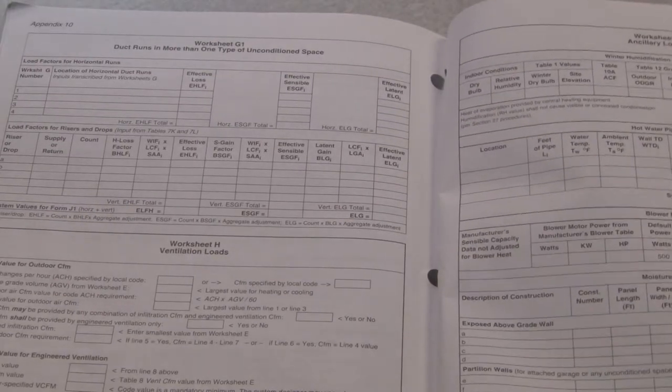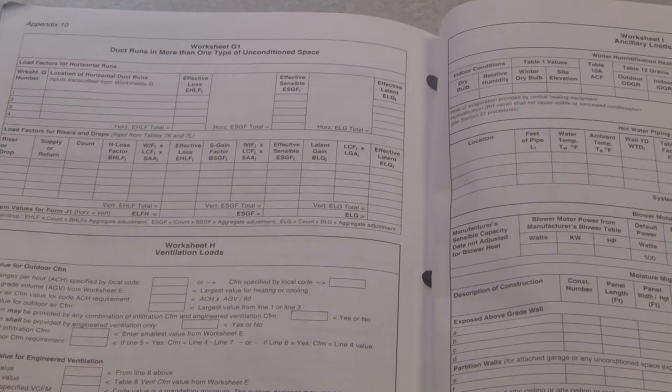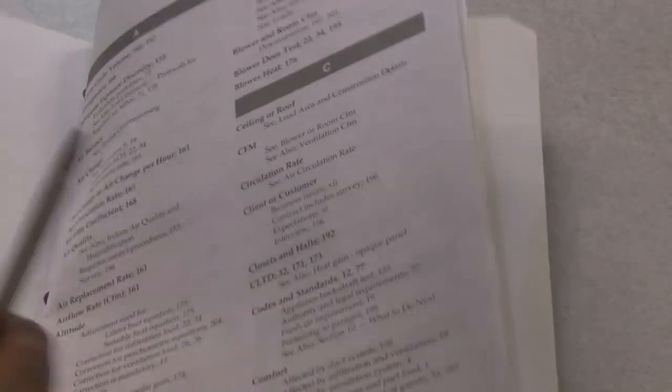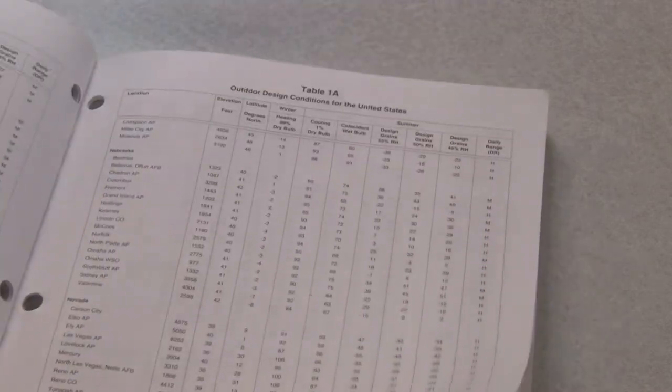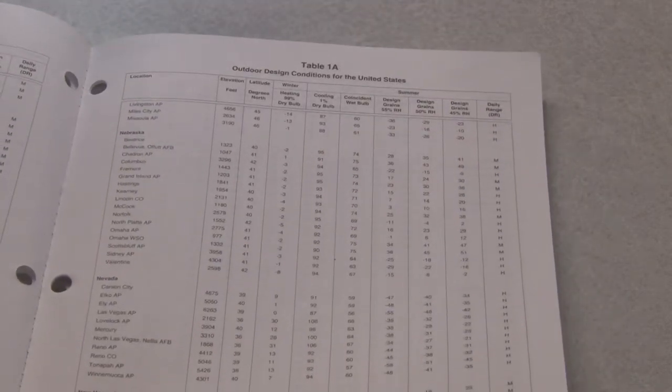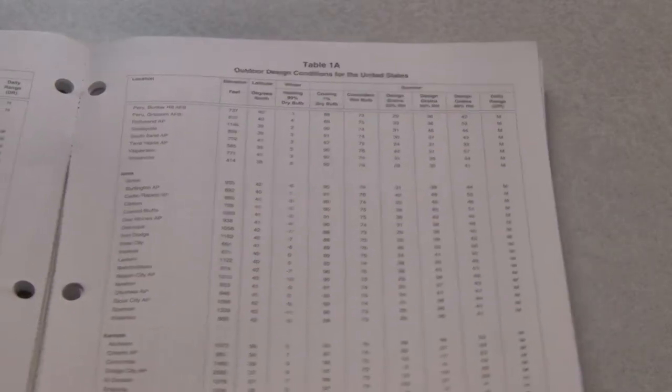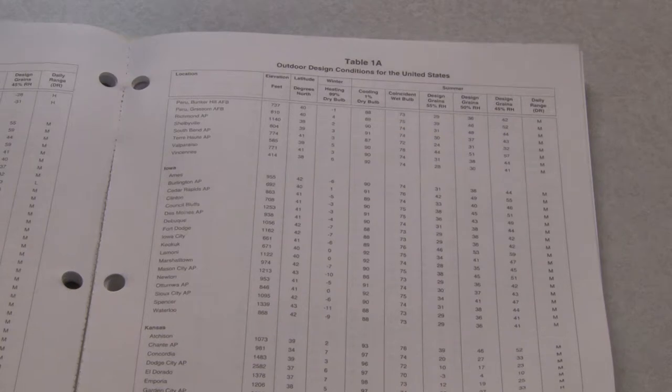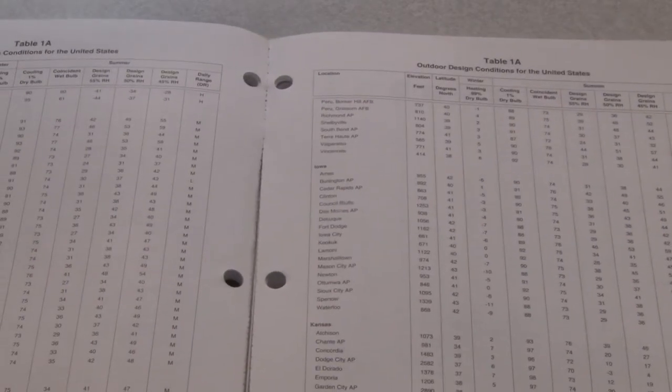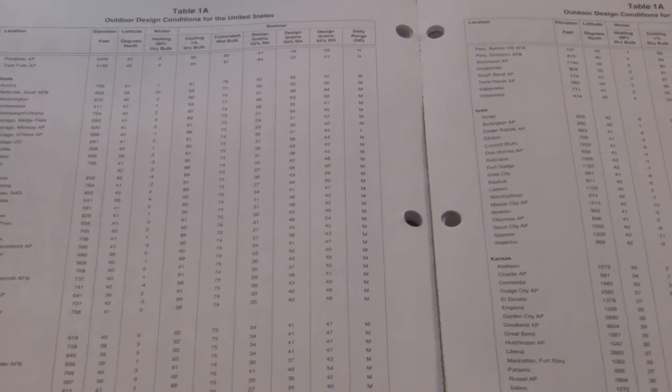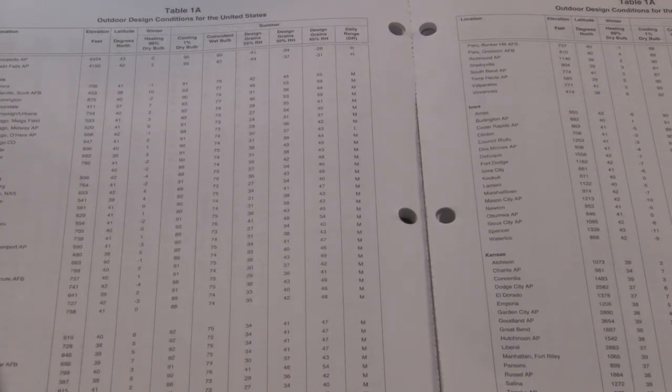There's other charts like worksheet G1. And that's pretty much how the book is put together. But after section 10, we go into tables. And the first table is 1A.